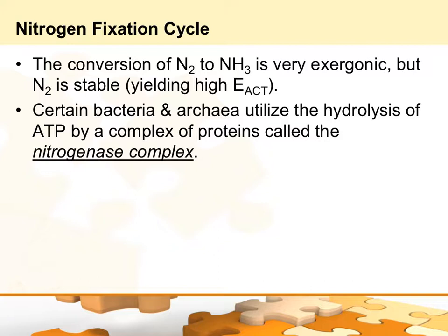Certain bacteria and archaea can actually use ATP in something called the nitrogenase complex. This is ultimately how they're going to take elemental nitrogen and make it into ammonia, which can then be used for other things, since elemental nitrogen itself is so inert. It's called the nitrogenase complex — that's the enzyme name. This is what it looks like.